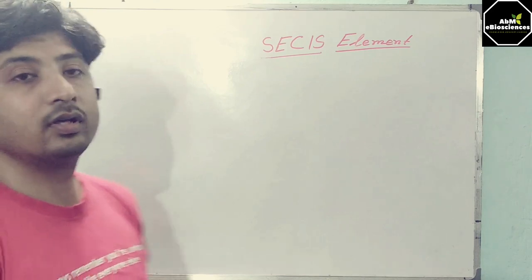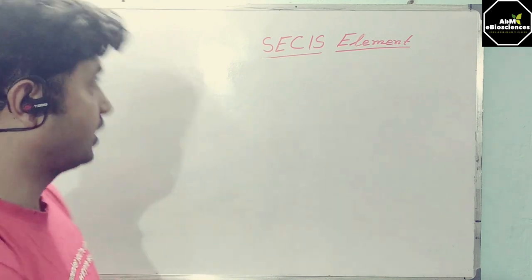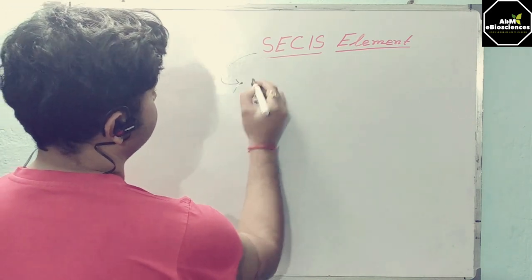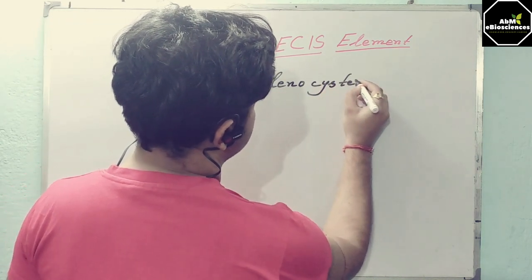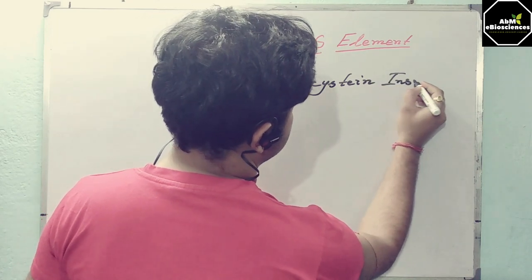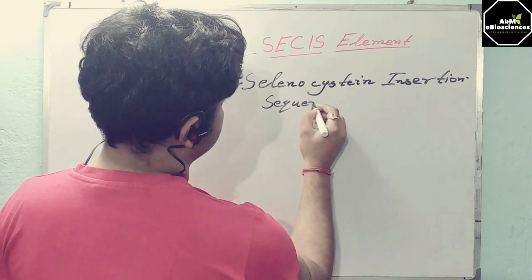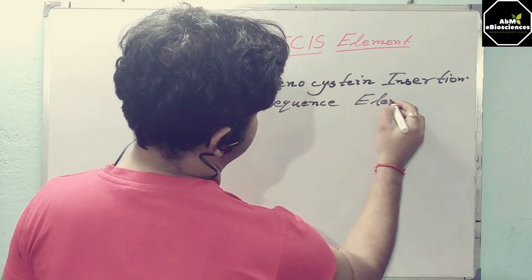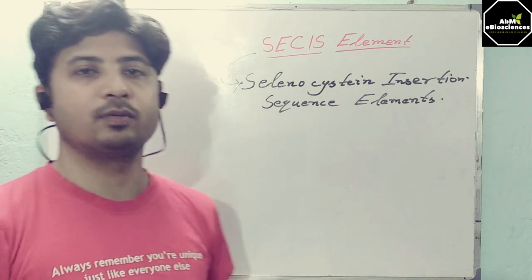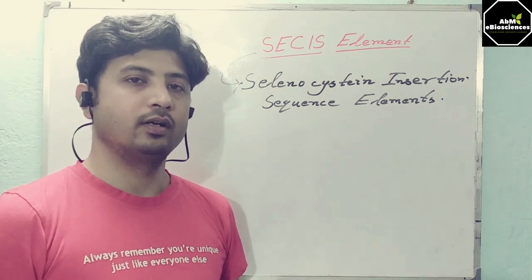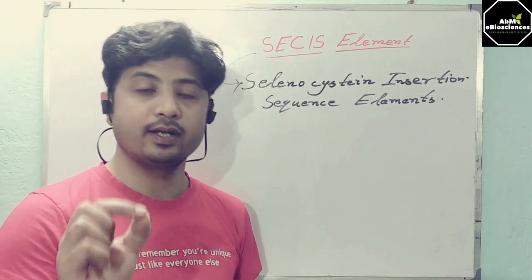SECIS stands for selenocysteine insertion sequence elements. Why is it so important from the aspect of molecular biology, of the central dogma, or at the RNA level? Because this SECIS element is actually an RNA element.